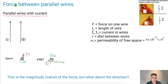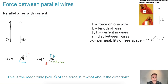We're going to talk about the force between two parallel wires — wires that have current in them. So two wires like this, where either the currents are in the same direction or they could be in opposite directions. Let's say this is wire number one with current going up; we'll call this I1. And this one here will be wire number two with the current I2 going in that direction.